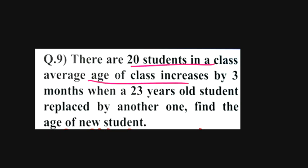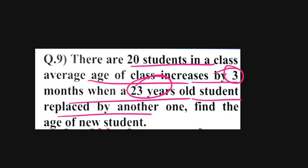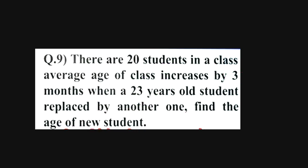There are 20 students in the class. The average age of the class increases by 3 months when a 23-year-old student is replaced by another one. Find the age of the new student. So what is here? 20 students in the class and the average here is 3.